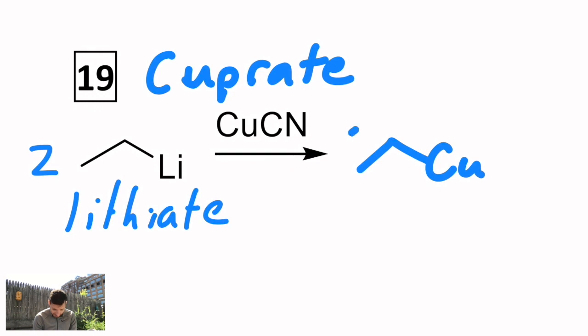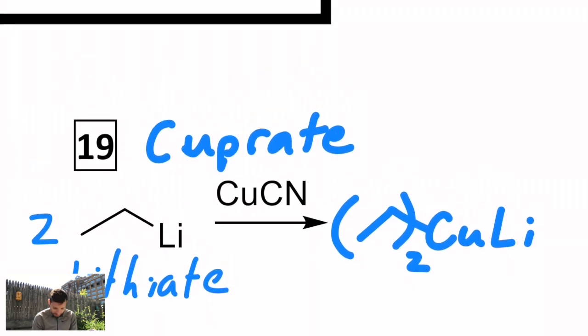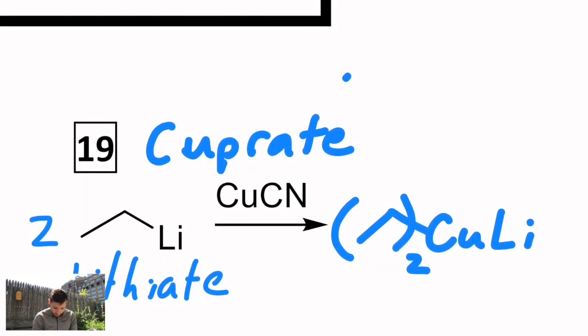So how they draw it is they put a pair of parentheses around the organic group, and then it's a copper anion. That's why it's called a cuprate. There is a positively charged lithium right next to it. It's sort of like two ethyl groups attached to a copper. There is a negative charge on the copper, and then to coordinate to it, a positively charged lithium.